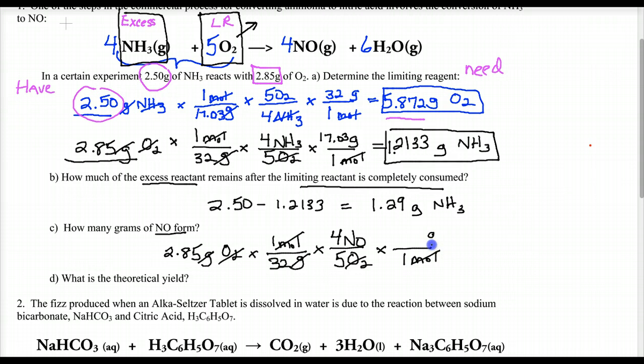My formula mass, 14 plus 16 is approximately, or it definitely is 30. That's the numbers I'm using here, my formula mass. So what do I get for grams of NO? I do my math. 2.85 divided by 32 times 4 divided by 5 times 30, and I get 2.14 grams. And you get the same answer if you started with exactly how much of the excess that was used.